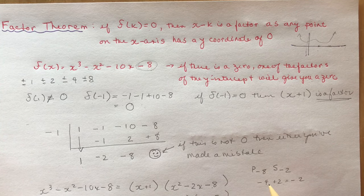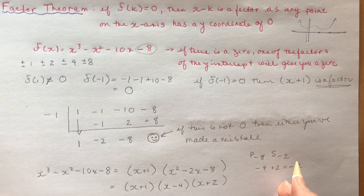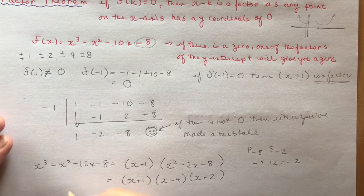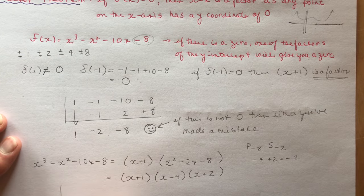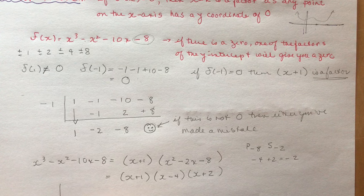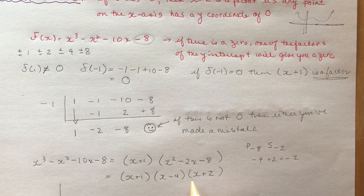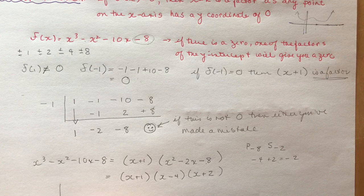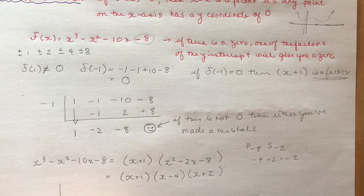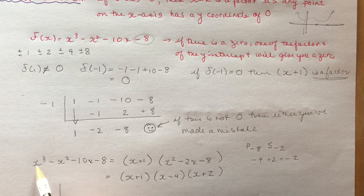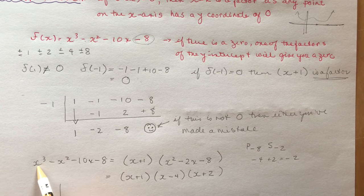If I asked you to sketch this now, you would make a nice graph — probably with a ruler. You're going to find all these zeros: minus 1, minus 2, and 4. Those are my zeros. Again, we check — it's a cubic function, so it had to have at least one zero.